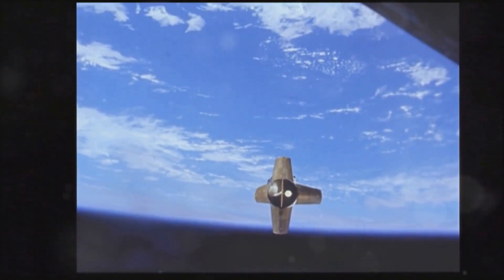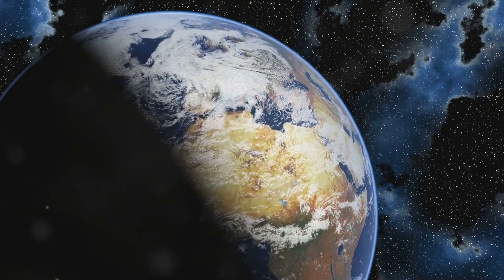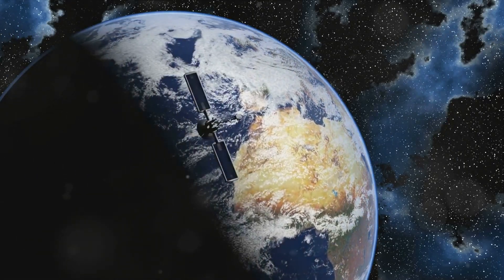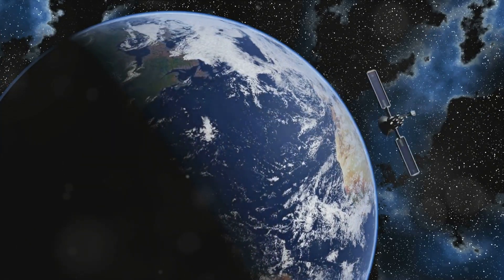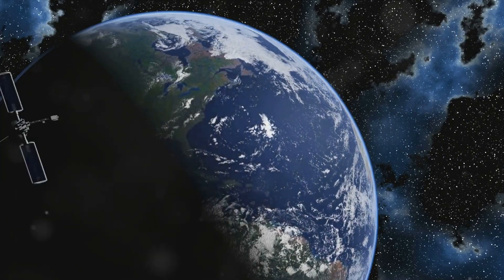Satellites orbiting Earth experience less gravitational pull, and thus time ticks slightly faster for them than for us on Earth. If this difference wasn't accounted for, GPS coordinates could be off by several kilometers.